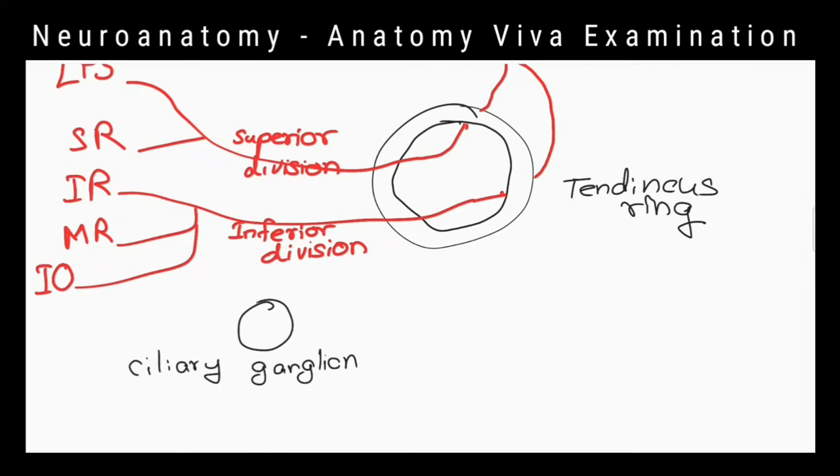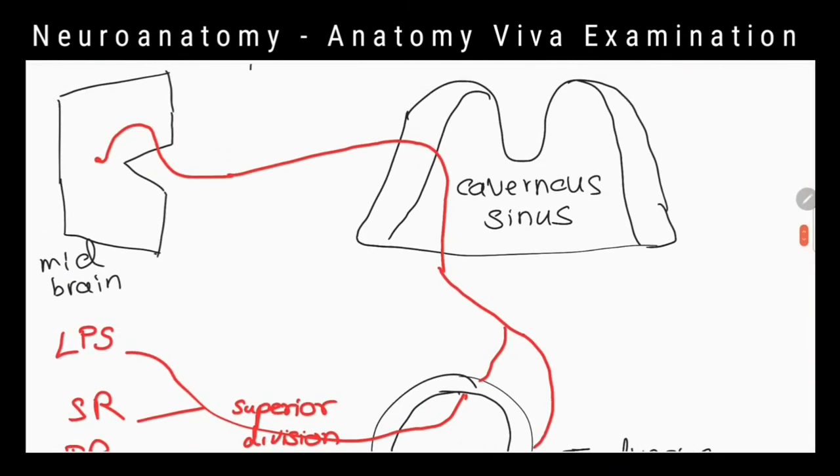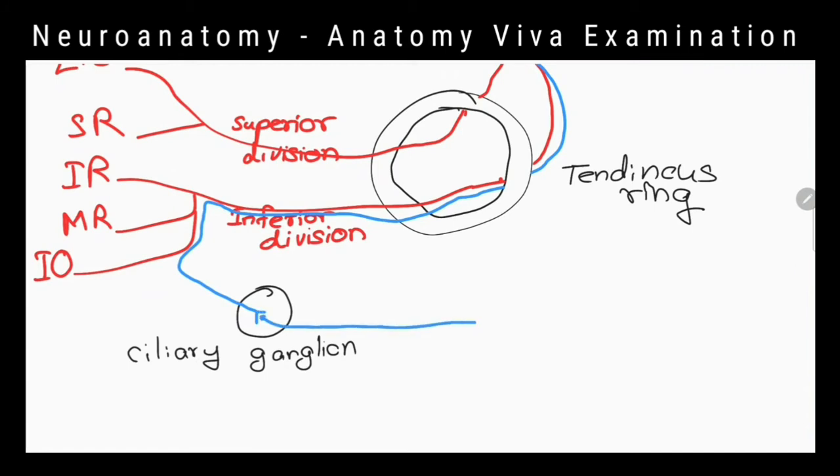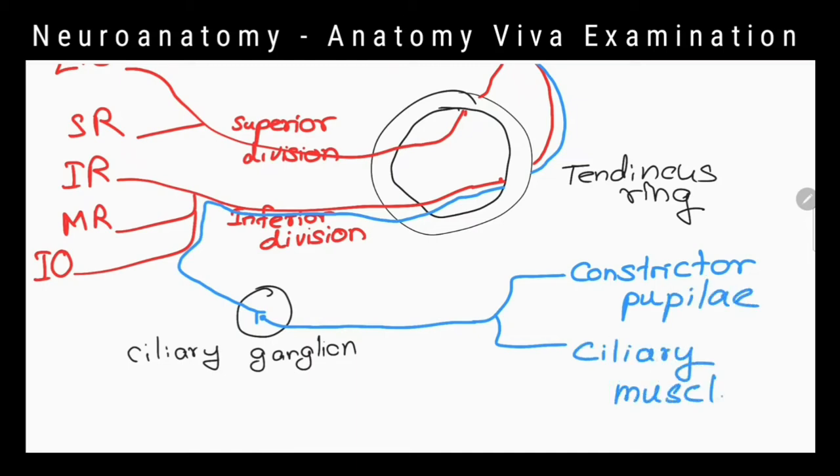Oculomotor nerve also contains parasympathetic fibers which accompany main nerve and then inferior division of the nerve. They synapse in ciliary ganglion and post-ganglionic fibers pass through short ciliary nerves to constrictor pupillae and ciliary muscles.